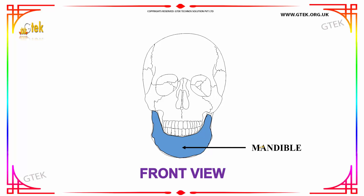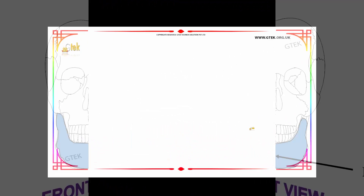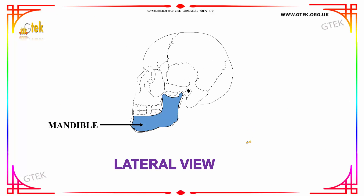Next we have the front view of the bone mandible. The mandible is the second part of the human skull. As you can see, the skull forms the first part and the mandible is the second part, which enables chewing of food. Next we have the lateral view of the bone mandible, where the blue region is the mandible bone.